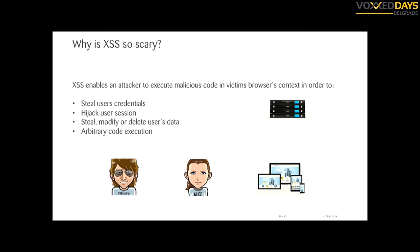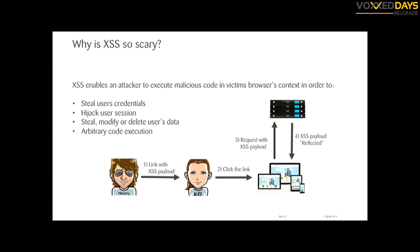In a nutshell, here's how reflected XSS works: an attacker wants to attack a victim — Alice — and sends a link containing a malicious payload in a query string parameter. Alice clicks the link, the browser executes the request, forwards the payload to the server, it gets reflected back, and then when it returns to the browser it gets executed.